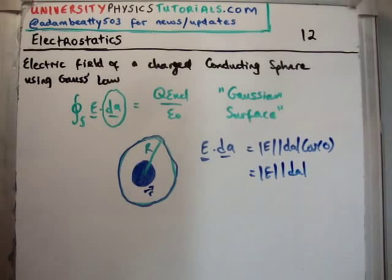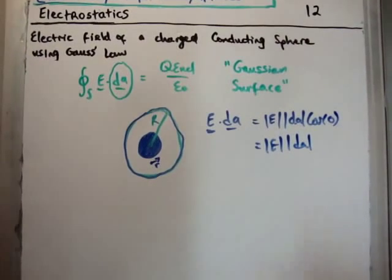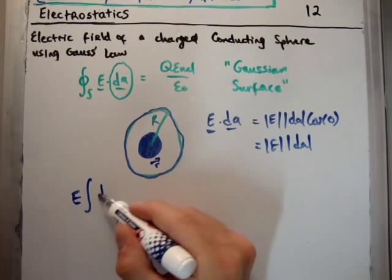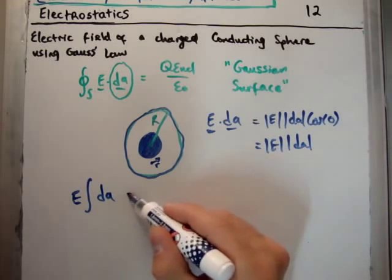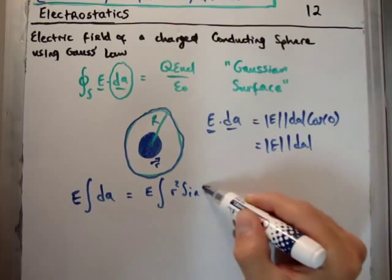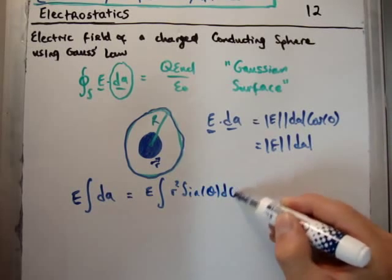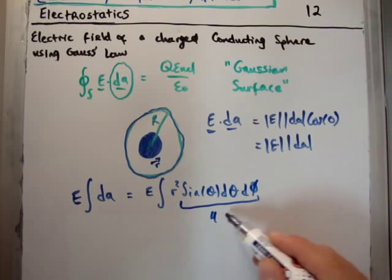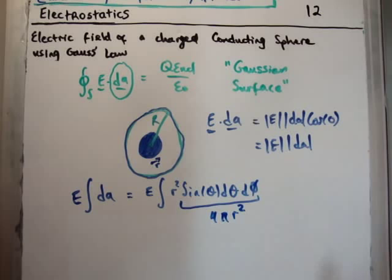That means it's going to be E dA cosine of naught. In other words, it's just going to be magnitude of E times the magnitude of dA. What we can do then is take the electric field out and integrate dA. Now dA is going to be for a sphere r squared sine theta d theta d phi, and that's just going to be equal to 4 pi r squared.